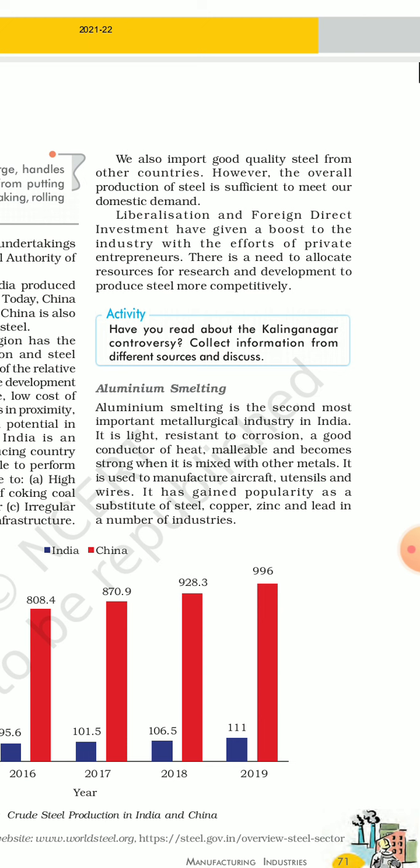Liberalization and foreign direct investment have given a boost to the industry with the efforts of private entrepreneurship. Liberalization means reducing restrictions — taxes and regulations — allowing more investment. Foreign direct investment and globalization have helped grow manufacturing industries. The iron and steel industry is basically a public sector unit, but private entrepreneurship is now playing a role.